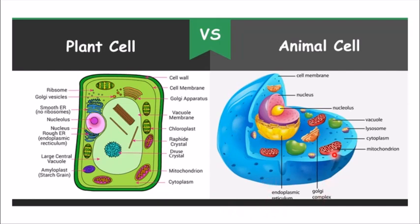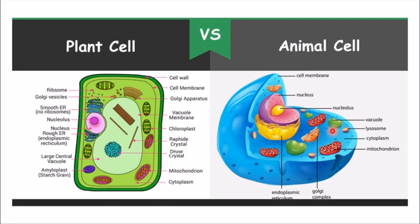We have mitochondria present in both. We have Golgi bodies which are present in both. We have lysosomes which are present in both. We also have vacuoles. One difference is that in the plant cell the vacuole is very big, whereas in the animal cell the vacuole is very small — most of the space in the plant cell is occupied by the vacuole, while only small minute vacuoles are present in the animal cell.